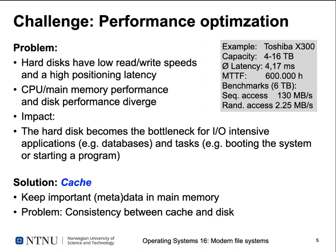We have low read and write throughput, high positioning latencies, and CPU and main memory performance increases much faster than mechanical hard disk performance. The impact is that the hard disk becomes the bottleneck for all I/O-intensive applications — databases, system boot, starting services, or loading a program with its shared libraries and startup data.